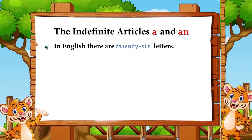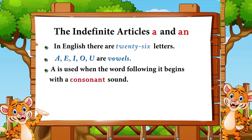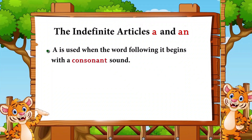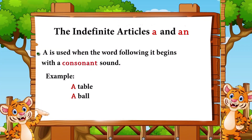In English there are 26 letters. Five of them — a, e, i, o, and u — are vowels. The remaining 21 letters are consonants. 'A' is used when the word following it begins with a consonant sound. Example: 'a table' — 't' is a consonant sound. 'A ball' — 'b' is a consonant sound.